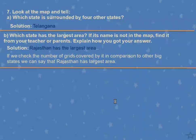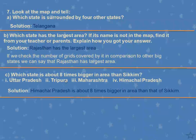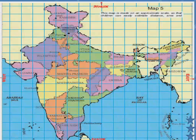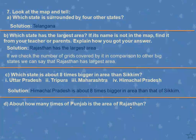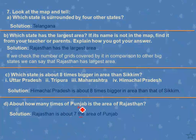Similarly, which state is about 8 times bigger in area than Sikkim? Himachal Pradesh is about 8 times bigger in area than Sikkim. Sikkim is the smallest state — you can find it on the map. If you multiply Sikkim's area by 8, it will be nearly equal to Himachal Pradesh's area. Next: about how many times of Punjab is the area of Rajasthan? Rajasthan is about 7 times the area of Punjab.